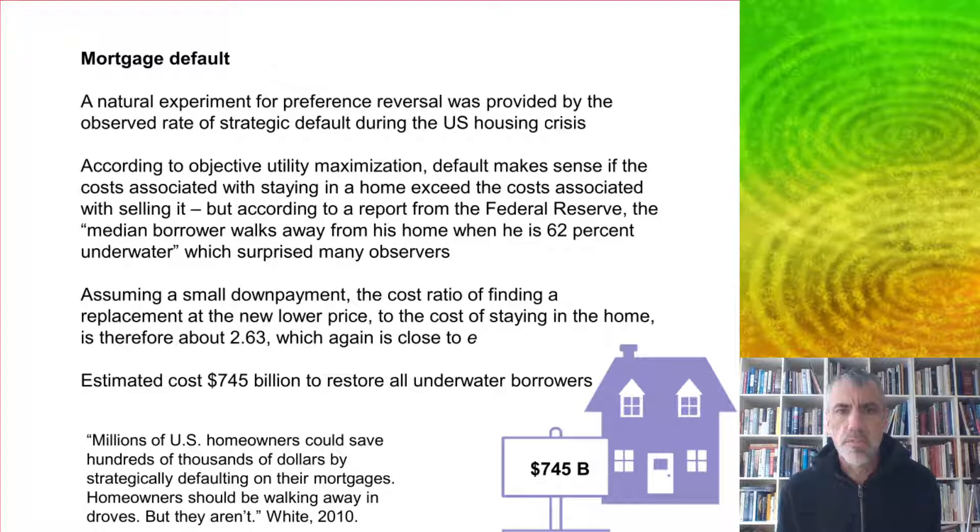According to objective utility maximization, default makes sense if the costs associated with staying in a home exceed the costs associated with selling it. In fact, surveys showed people said they were willing to default if that were the case. But according to a report from the Federal Reserve, the median borrower walks away from his home when he is 62% underwater, which surprised many observers.